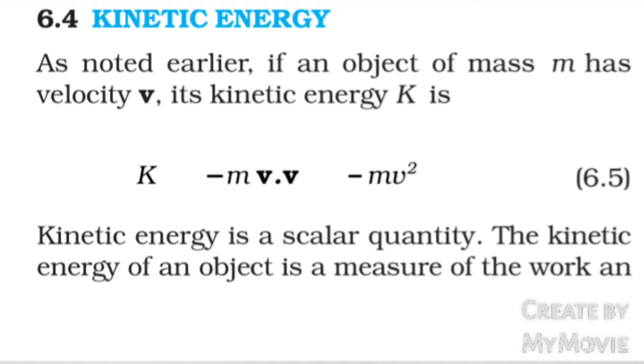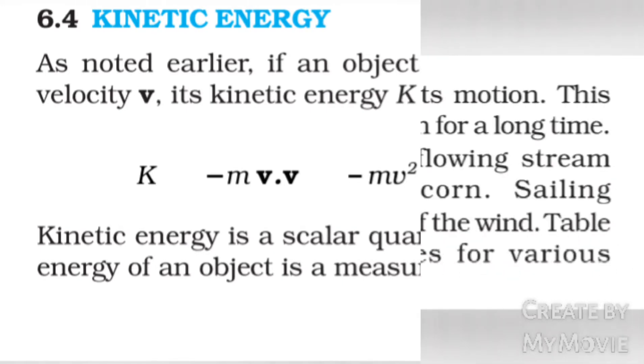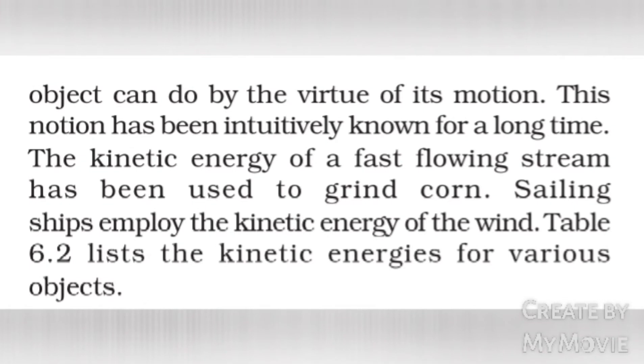The kinetic energy of an object is a measure of the work an object can do by virtue of its motion. This notion has been intuitively known for a long time. The kinetic energy of a fast-flowing stream has been used to grind corn. Sailing ships employ the kinetic energy of the wind. Table 6.2 lists the kinetic energies of various objects.